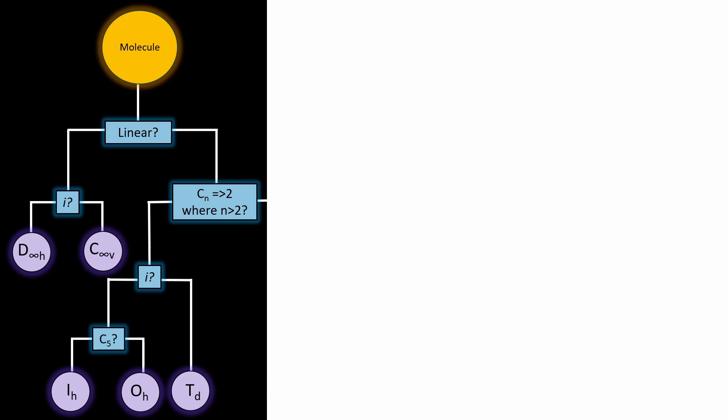So let's go through it. Let's first ask, is the molecule linear? If yes, check for a center of inversion. If yes, we have D infinity H, for example hydrogen. If no, we have C infinity V, for example carbon monoxide.